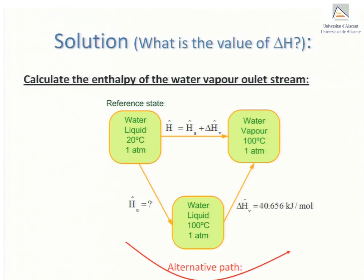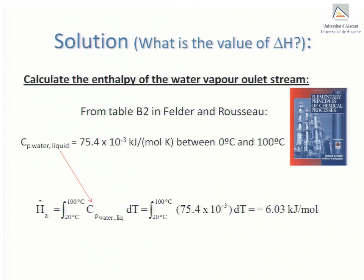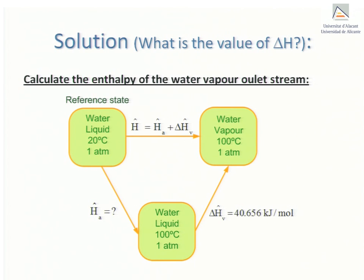The molar enthalpy, H hat A, is calculated by integrating, over temperature, the constant pressure heat capacity, C sub p, of liquid water. From the temperature of the box the arrow points away from, 20 degrees C, to that of the box in whose direction the arrow points, 100 degrees C. Now, values of Cp can be obtained from standard reference tables. Therefore, from table B2 in the back of Felder and Rousseau, we find that Cp of liquid water is 75.4 times 10 to the minus 3 kJ per mole Kelvin, which is an average value that is valid between 0 and 100 degrees Celsius. So, calculating the integral gives 6.03 kJ per mole for H hat A. Finally, the molar enthalpy we seek is just the sum of H hat A and the latent heat of vaporization of water, which comes to 46.69 kJ per mole. This value can now be recorded in the table.